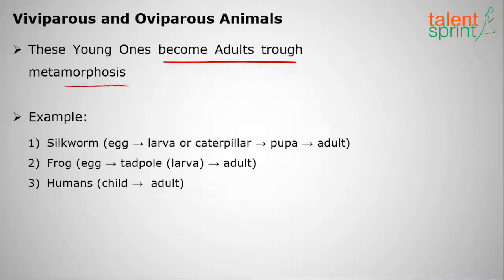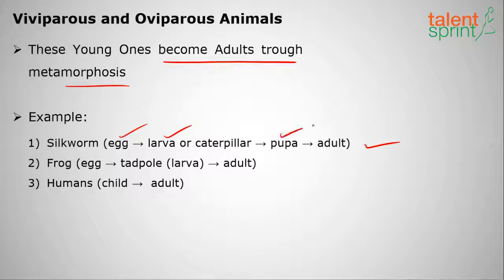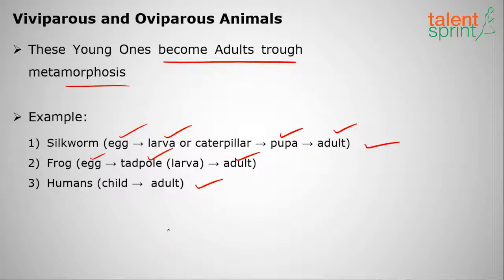These young ones become adults through a change in forms called metamorphosis. For example, the silkworm goes from egg to larva (caterpillar) to pupa to adult. The frog goes from egg to tadpole to larva to adult. In humans, it is a transformation from child to adult.